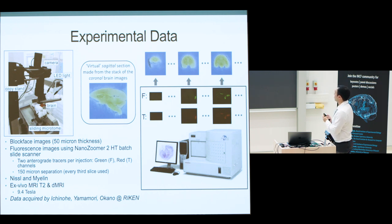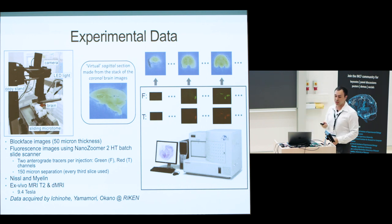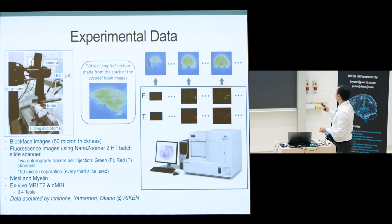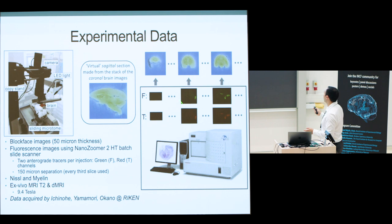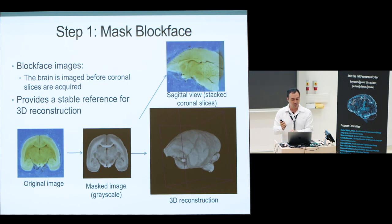For this use case, the experimental data we acquired: we inject the brain, the brain is sectioned using a microtome, and at the same time block face images are taken. If you assemble these block face images they're all aligned and you can get a stable reference of the brain shape. Two tracers are injected at once — green and red — so there's a correspondence between the fluorescence images captured by the NanoZoomer and the block face. The idea is to map these fluorescence images to the block face to get the 3D reconstruction.